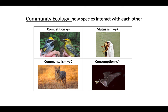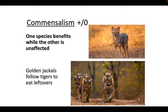Commensalism is a strange one — it's positive for one species and zero for the other. These are weird interactions, very hard to document, because it's hard to show that something truly has a zero effect on the other species. We see this with golden jackals and tigers in India, where the jackal follows the tiger, and when the tiger leaves behind a kill, the jackals feed on the leftovers. It's positive for the jackals, getting some food, and a zero interaction for the tigers, since the jackals have no impact on them.